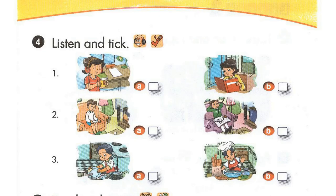Page 53. Lesson 1. Activity 4. Listen and tick. 1. Where are you, Wa? I'm in my room. What are you doing? I'm reading.